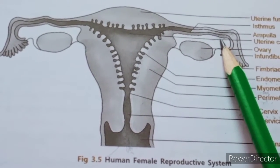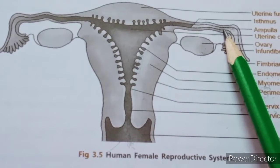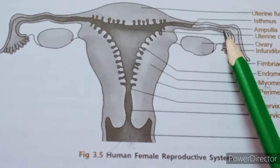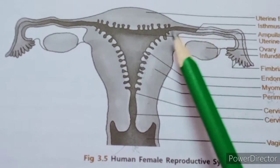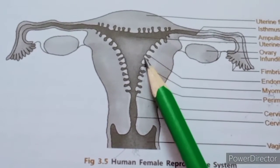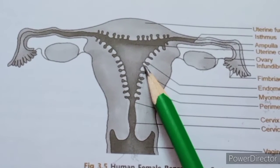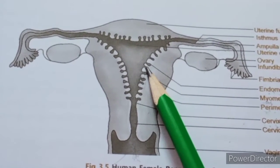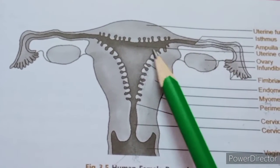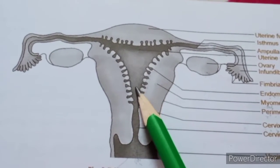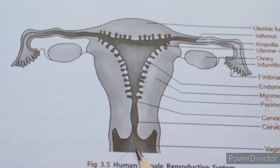Functions of the fallopian tube: the male gamete (sperm) and the female gamete (ovum) fuse within the fallopian tube, so it acts as the site of fertilization. It also transfers the zygote or fertilized egg to the uterus for implantation, and transfers the unfertilized egg to the uterus during menstruation, where it is released along with blood and mucus through the vagina.